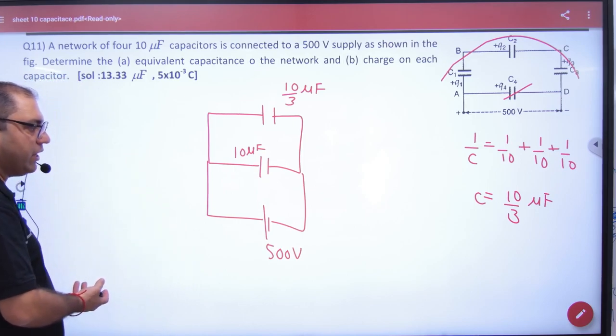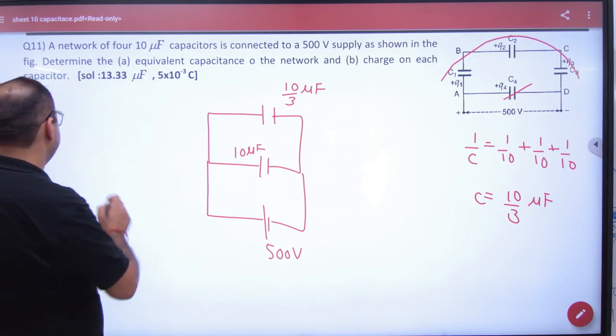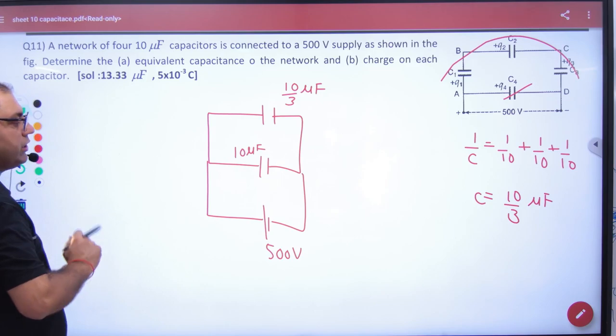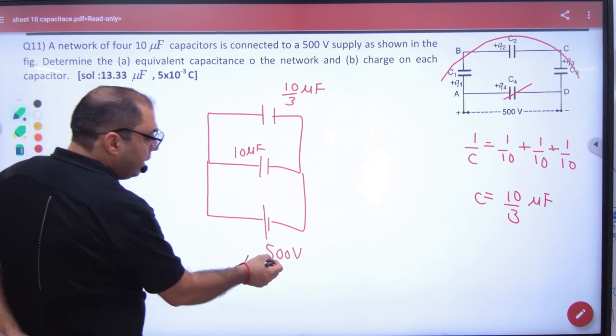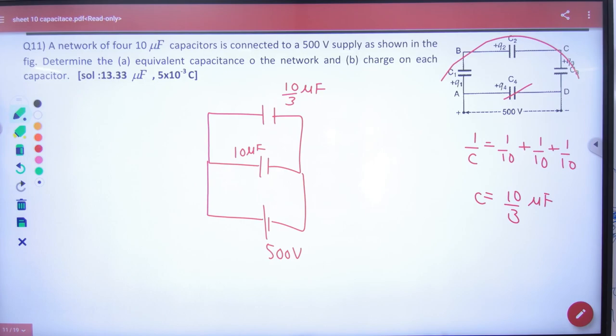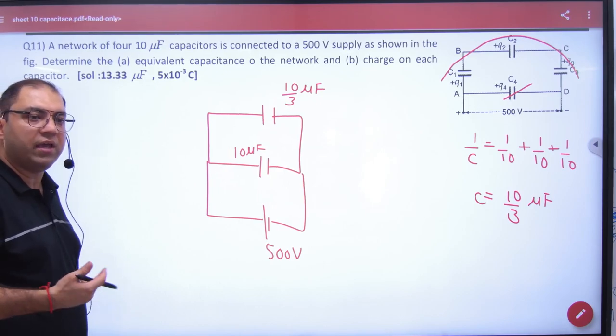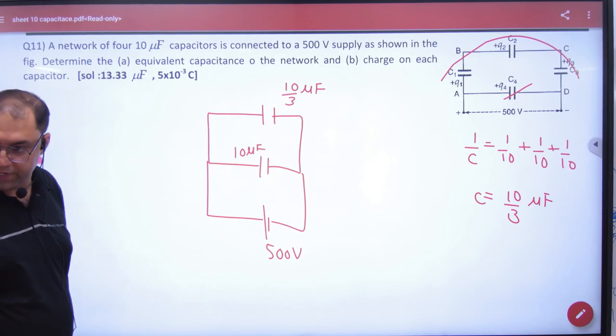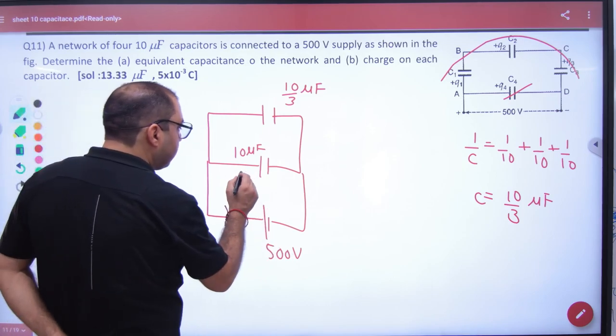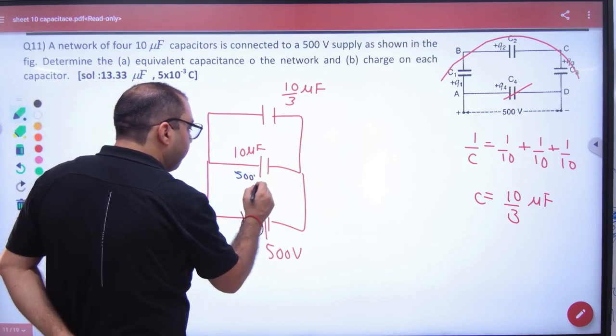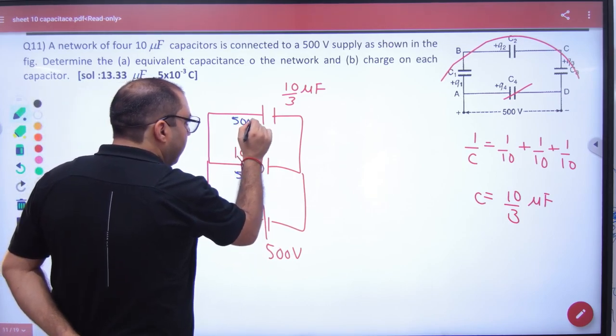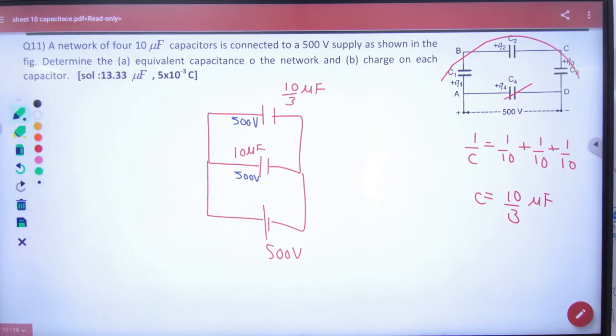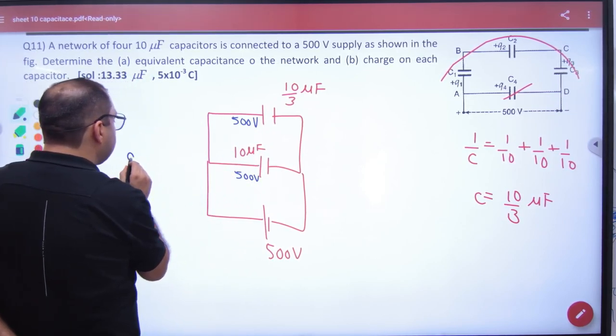Charge on each capacitor. I don't need to go forward. Why? Because these two are connected parallel. What is same in parallel? V. So, if the battery V is 500, how much will it be? 500. Remember, parallel in V was the same.